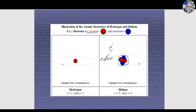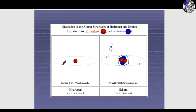Here we can see an illustration of hydrogen and helium atoms. The small silver ball represents electrons, the large red ball represents protons, and the blue one represents neutrons. In hydrogen, one electron revolves around the orbit of one proton.